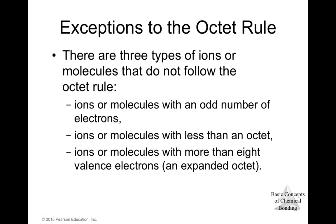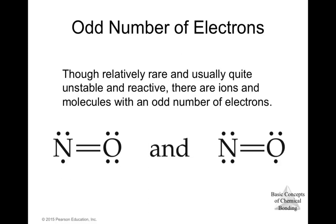There are three types of exceptions to the octet rule. First, ions or molecules with an odd number of electrons — called radicals — such as NO₂, where nitrogen has an unpaired electron. In the resonance structure, one oxygen can also end up with only five electrons around it. These are exceptions to the octet rule.